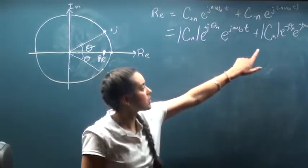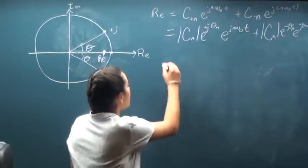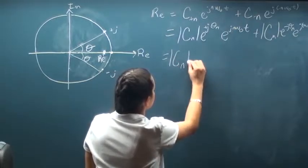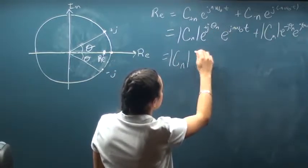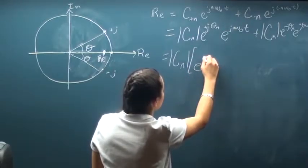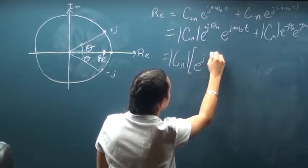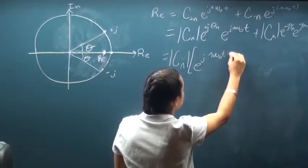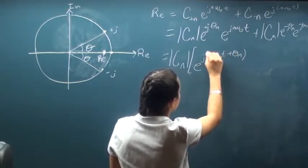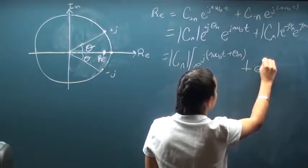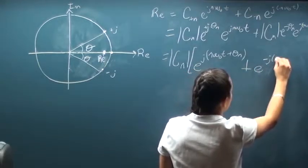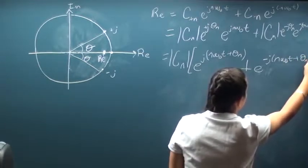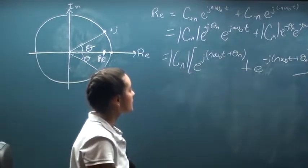Now we can distribute out this magnitude of the coefficient and combine the exponents. So e to the j n omega naught t plus theta n, plus e to the negative j n omega naught t plus theta n.